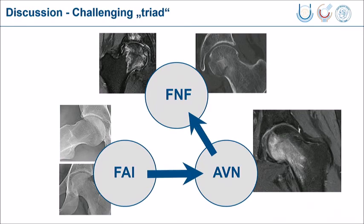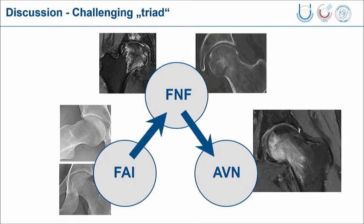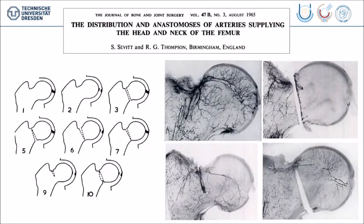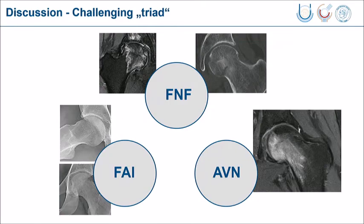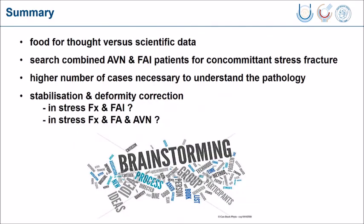It could be that the impingement is triggering AVN, as I have shown, and it could be that AVN is also leading to femoral neck fractures due to weakening of the bone. It could also be that the impingement is leading to a femoral neck stress fracture, and the stress fracture caused secondary avascular necrosis. We have evidence that disruption of different parts of the femoral neck blood supply can lead to distinct patterns of diminished blood flow in the head. So both pathways are possible, or it could be that there is no causal relationship at all.